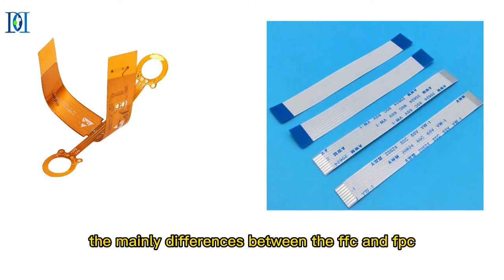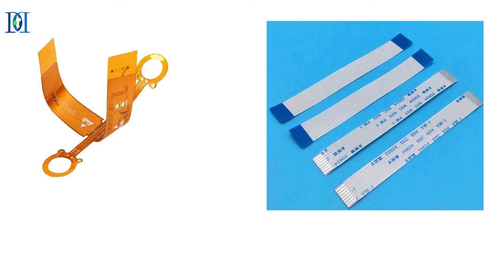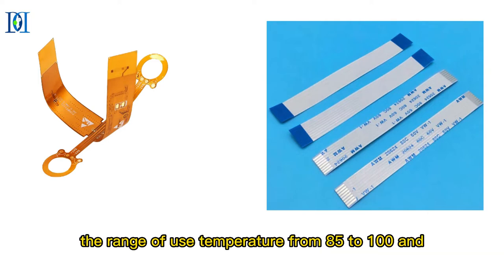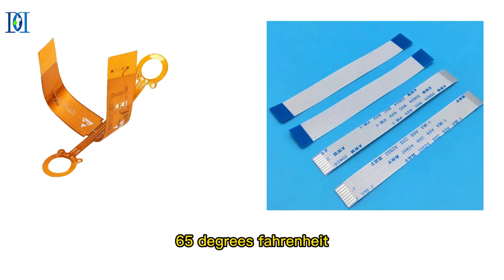The main differences between FFC and FPC: 1. Base material different. FFC base material is PET material, with a temperature range from 85 to 165 degrees Fahrenheit.